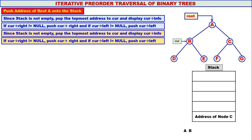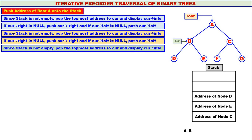Curr's right is not equal to null — it is the address of node E — so we push node E onto the stack. Curr's left is not equal to null — it is the address of node D — so node D is also pushed onto the stack. The stack is not empty, so we pop node D to curr, and D is displayed.